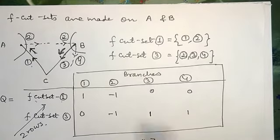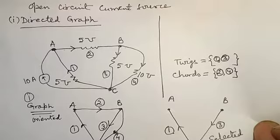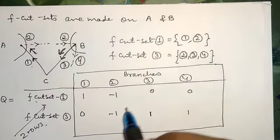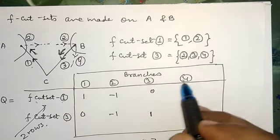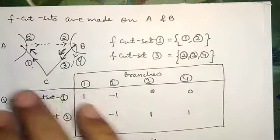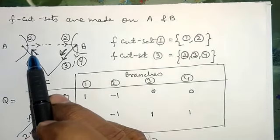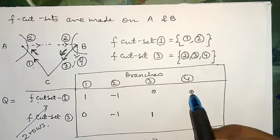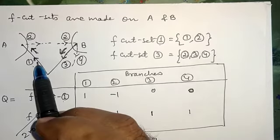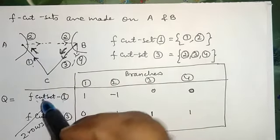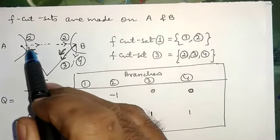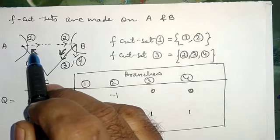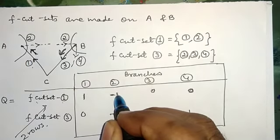Since the branches on this directed graph are 4, the number of columns in this F-cut set matrix will be 4 — columns 1, 2, 3, and 4. F-cut set 1 is having branches 1 and 2, therefore 1 and 2 will be 1, and 3 and 4 will be considered 0. The direction of twig number 1 and the reference are the same, therefore 1 will be positive. Chord number 2 is away from the isolated node, which is opposite to the reference, therefore for branch number 2, I have written minus 1.